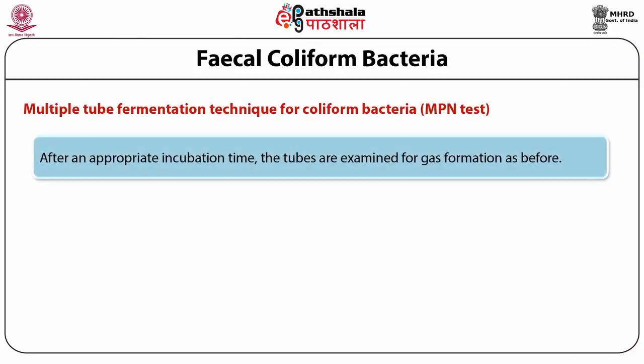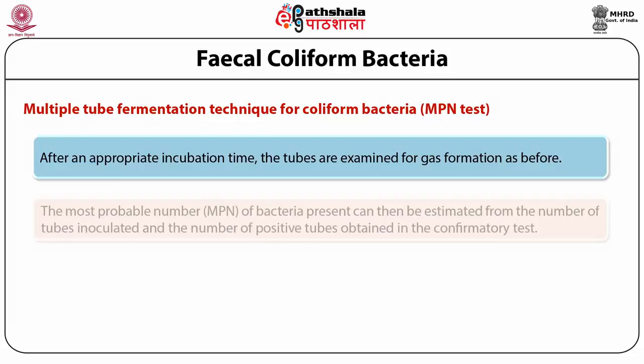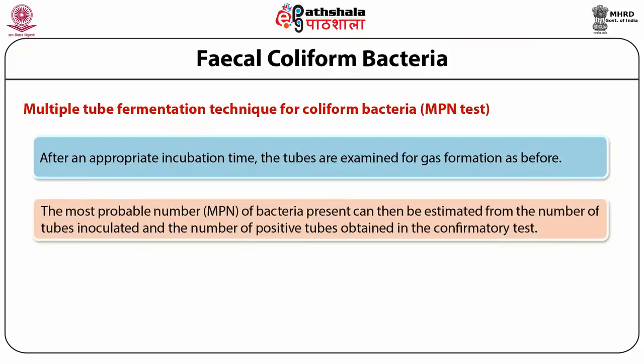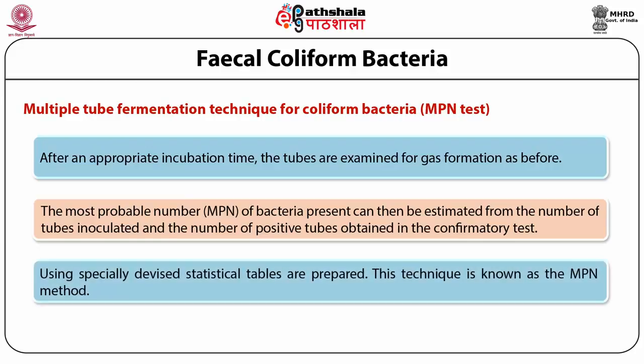After an appropriate incubation time, the tubes are examined for gas formation as before. The most probable number of bacteria present is then estimated from the number of tubes inoculated and the number of positive tubes obtained in the confirmatory test, using specially devised statistical tables. This technique is known as the MPN method.